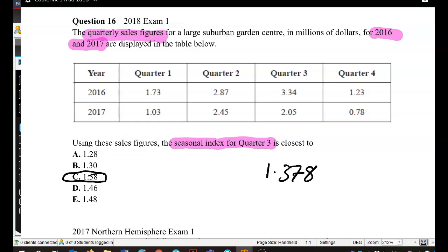51% of the state answered correctly and 19% answered D, which I'm not sure where they got that one from. But we've got to go through those couple of processes where we find that quarterly average for 2016, 2.29. Quarterly average for 2017, 1.58.